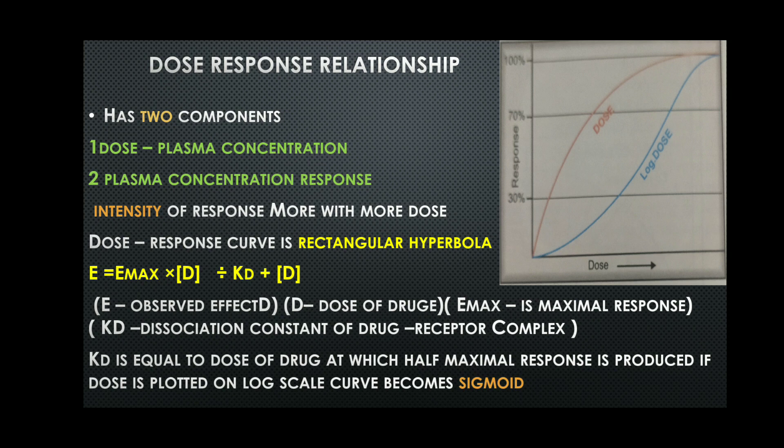The intensity of response is more with a higher dose. If you are increasing the dose, the response is going to be more. The dose-response curve is a rectangular hyperbola, as you can see in the figure. If you look at the log-dose curve, it is of sigmoid shape.